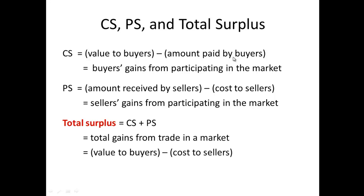When we talk about consumer surplus, remember from our previous lecture, consumer surplus is the value or satisfaction that buyers receive — it is their willingness to pay minus what they actually pay for a good or service. Producer surplus is the value received by the seller — it is the cost to produce and sell a good or service minus the actual sales price. When we put consumer surplus and producer surplus together, we come up with total surplus.